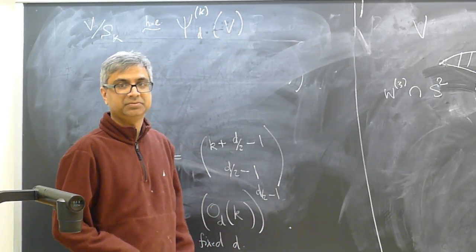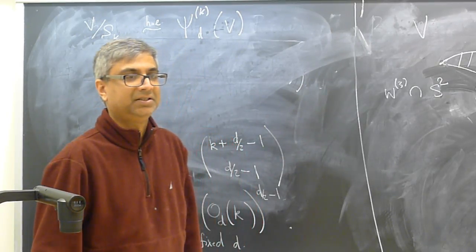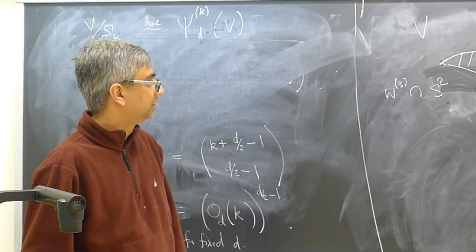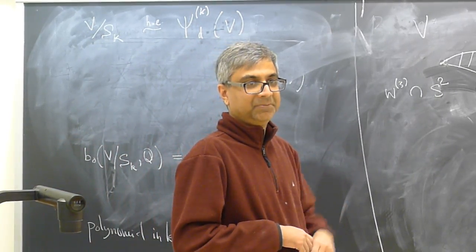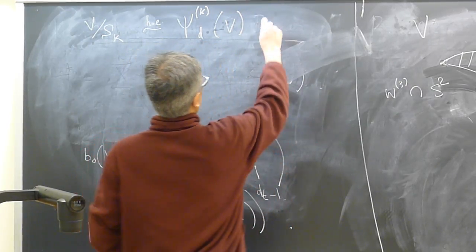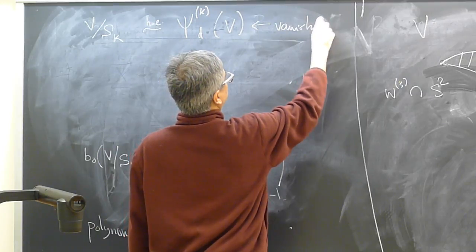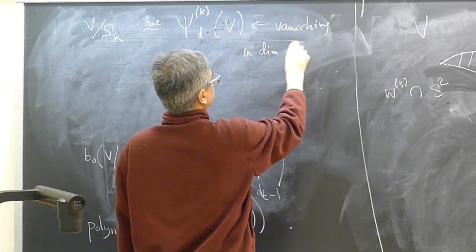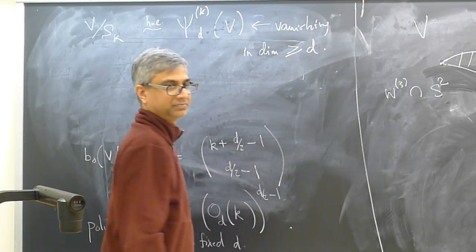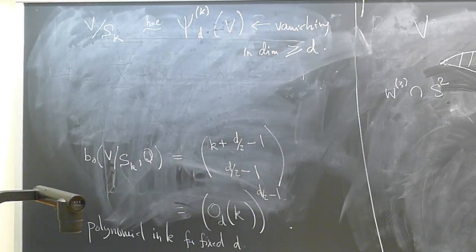You said d over 2 something? No, the vanishing was d while the bound was d over 2. So that gives vanishing in dimension equal to d.